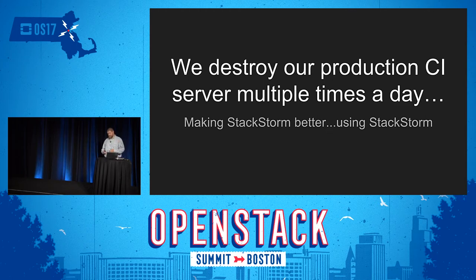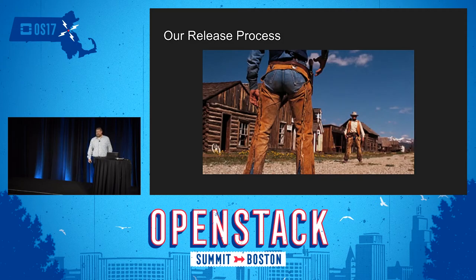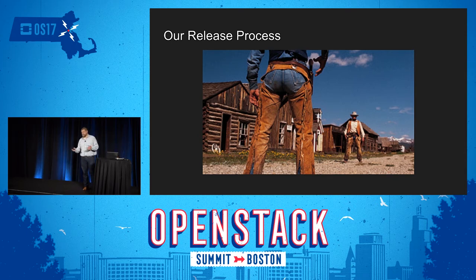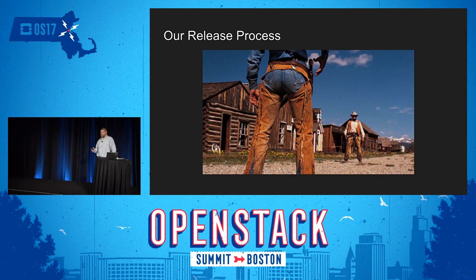I'm going to talk first about our release process and why it was such a pain, then go into how we use StackStorm and other tools to help. Our release process is a little bit like the wild wild west. We'd divide up work — looking at big features, refactors, bug fixes — divide that among team members, and also handle community contributions and newly reported bugs during the release cycle. By release time, the delta between the previous version and the current one can actually be pretty big.